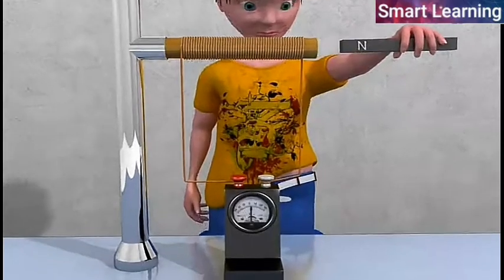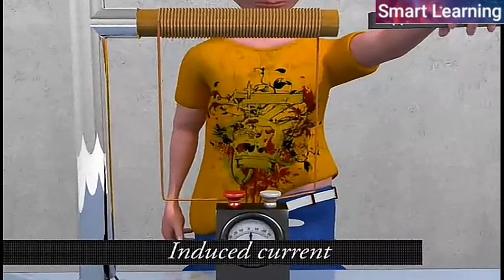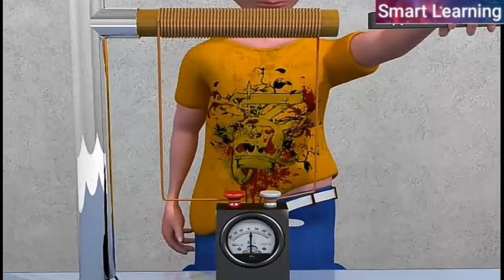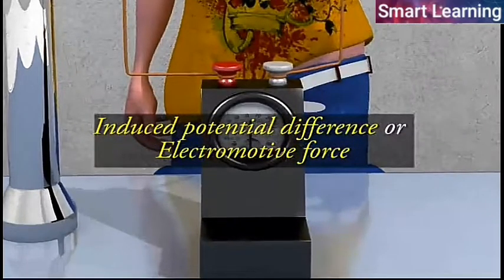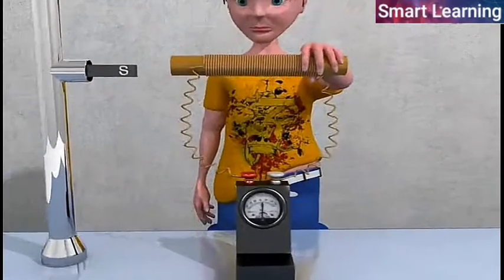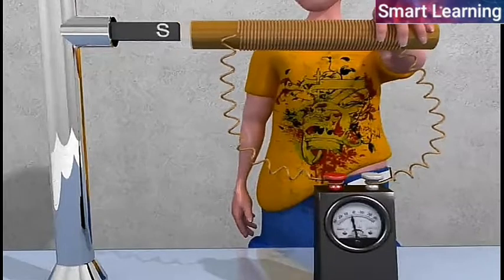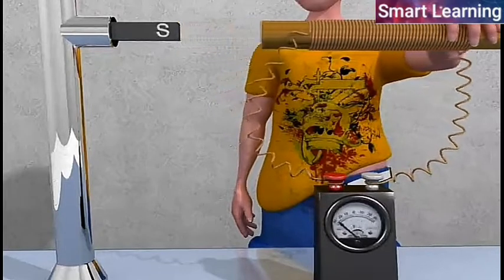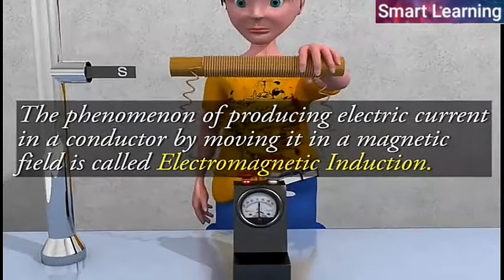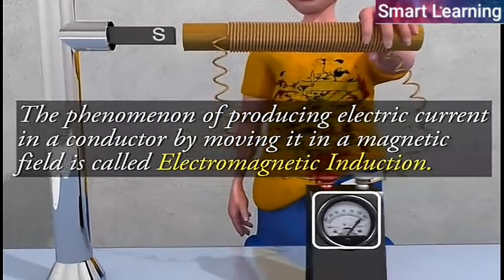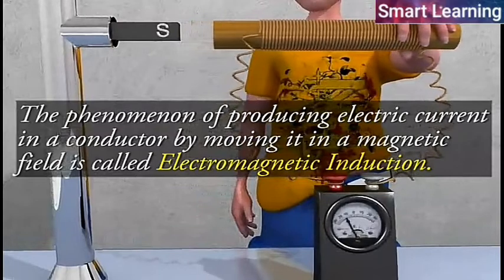The current produced in the coil by changing magnetic flux linked with it is called the induced current and the corresponding potential difference is called the induced potential difference or electromotive force. Whenever a conductor is moved inside a magnetic field, the flux linked with it changes and induced currents are set up in it. The phenomenon of producing electric current in a conductor by moving it in a magnetic field is called electromagnetic induction.